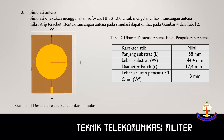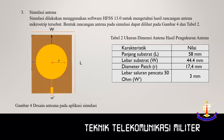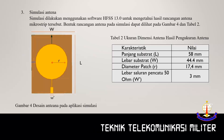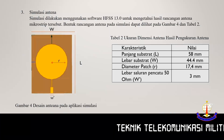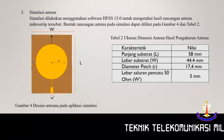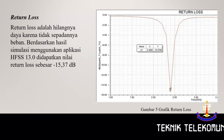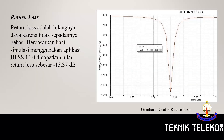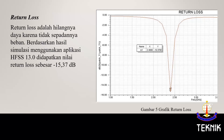Lebar substrat 44,4 mm, diameter patch 17,4 mm, lebar saluran pencatu 3 mm. Return loss adalah hilangnya daya karena tidak sepadannya beban. Ini adalah grafik yang dihasilkan oleh aplikasi simulasi. Didapatkan return loss sebesar -15,37 dB. (Substrate width 44.4 mm, patch diameter 17.4 mm, feed line width 3 mm. Return loss is the power loss due to impedance mismatch. The simulation graph shows a return loss of -15.37 dB.)